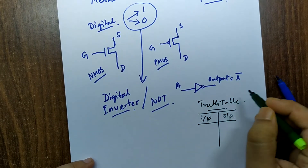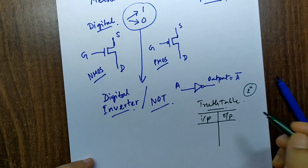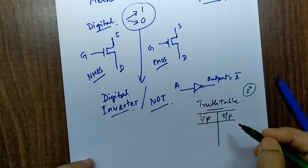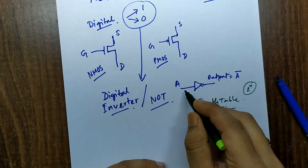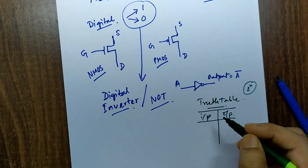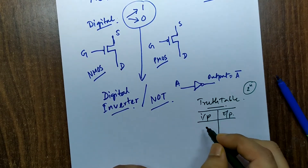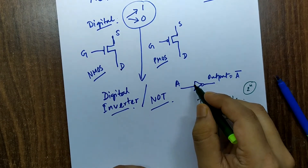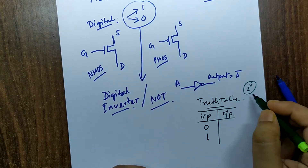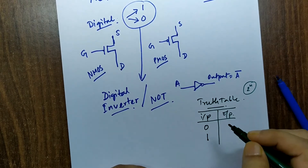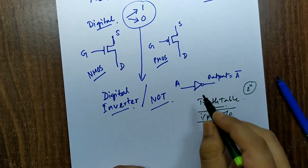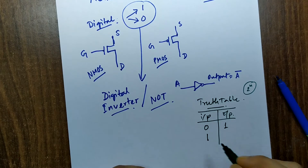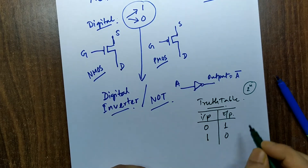With one input, the number of combinations is 2 to the power n, where n is the number of variables. For the inverter, n equals 1, so 2 to the power 1 gives us 2 combinations: either 0 or 1. The truth table for the NOT gate: if input is 0, output is 1 (opposite); if input is 1, output is 0. This is the truth table we need to satisfy.